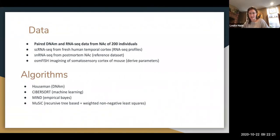So the main data set that they used is paired DNA methylation data and RNA-seq data from the NAC of 200 individuals. So the DNA methylation data is used as the truth. And then the RNA-seq data is what we're trying to derive from. So that's how we have a truth versus an estimation.